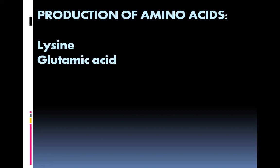Good morning students. In today's class we will be discussing about the production of amino acids — specifically glycine and glutamic acid. These amino acids are biologically important organic compounds containing an amine group (NH2) and a carboxylic acid group (COOH) as functional groups, usually along with a side chain specific to each amino acid.